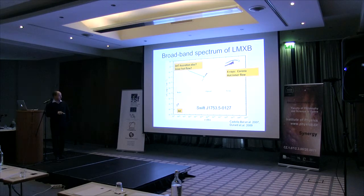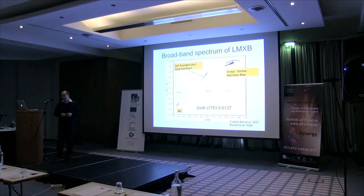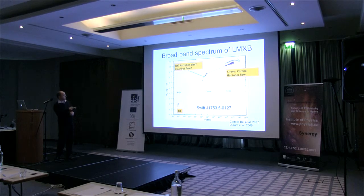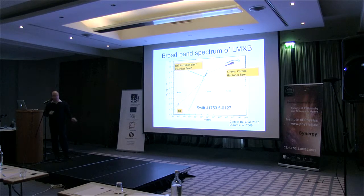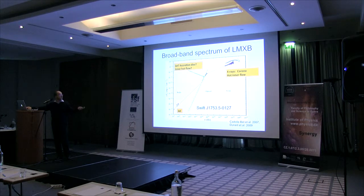The broadband spectrum of Swift J1753 goes from radio up to hard X-rays, and shows several components: there is a jet producing radio emission at low energies, X-ray emission from the hot inner flow, and optical-infrared emission with several question marks. It is unclear whether the jet continues to contribute in the infrared and optical — the jet radiation doesn't exactly match those points — or whether this is from the hot accretion flow, or from the outer irradiated accretion disc. This is a region where all components — jet, hot flow, and accretion disc — can potentially contribute.